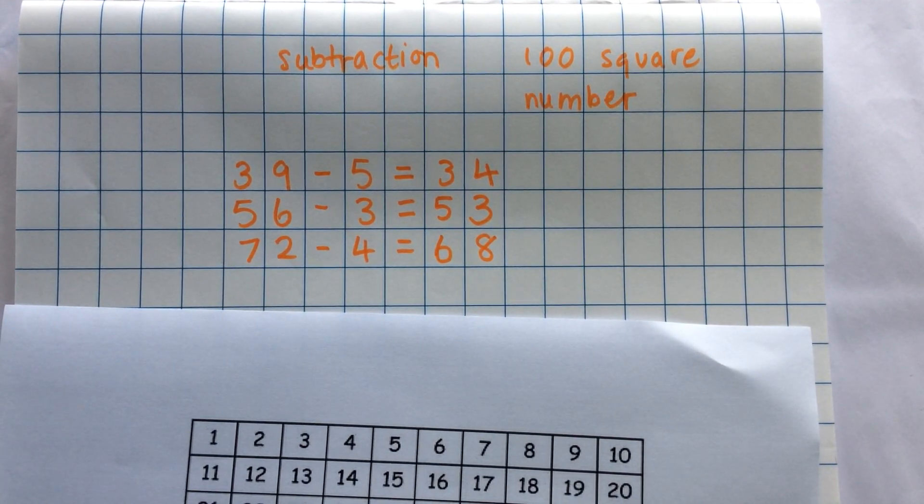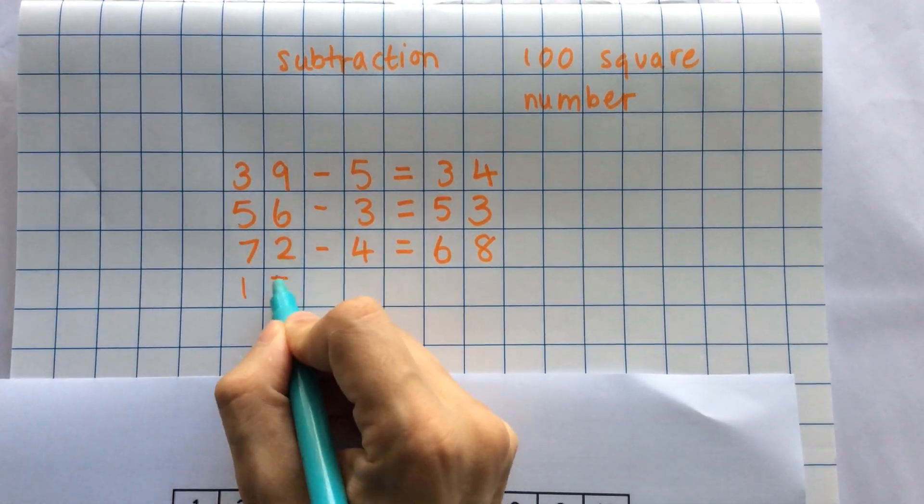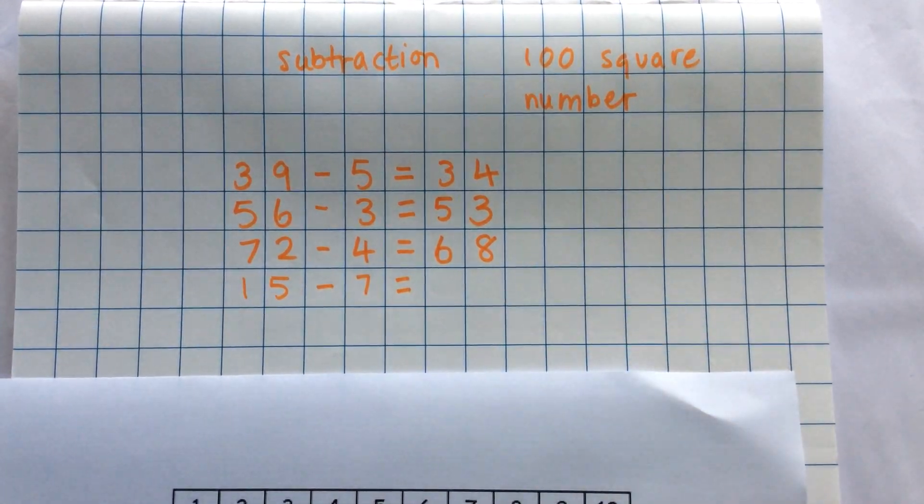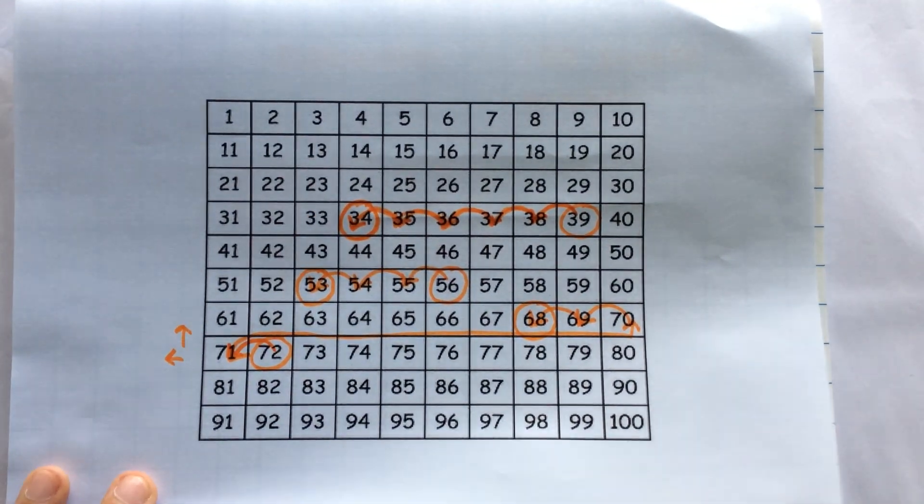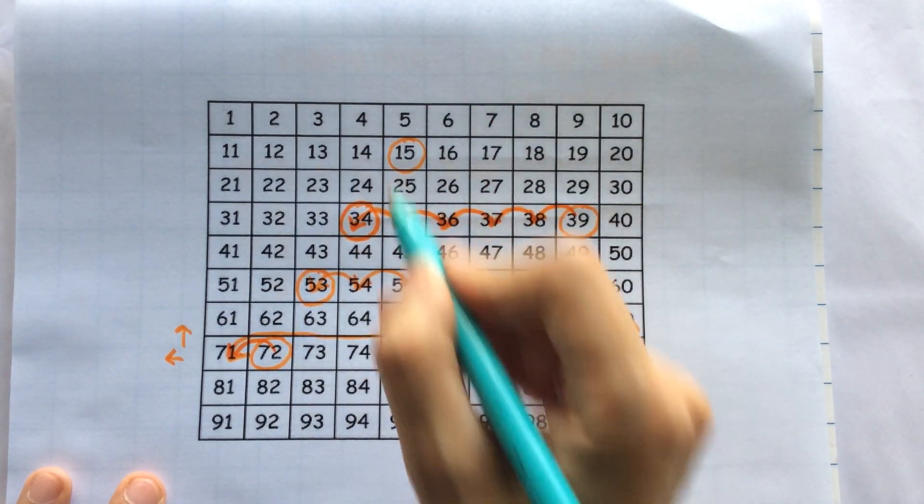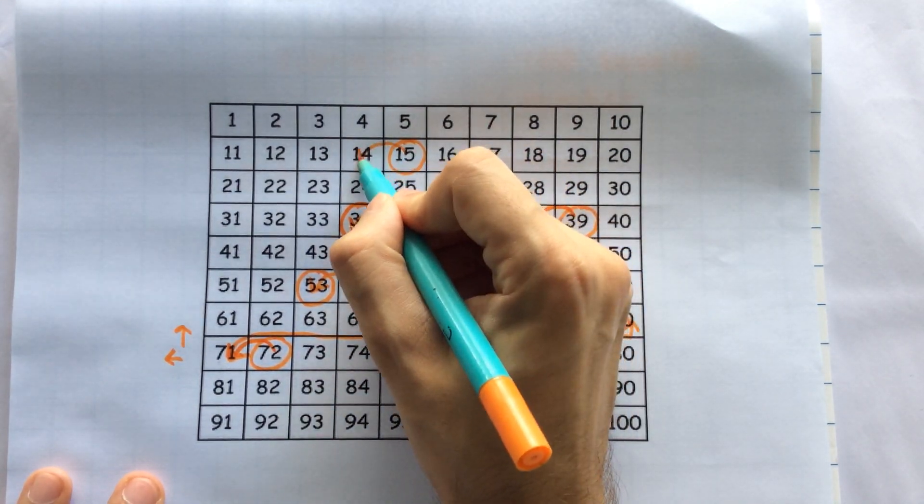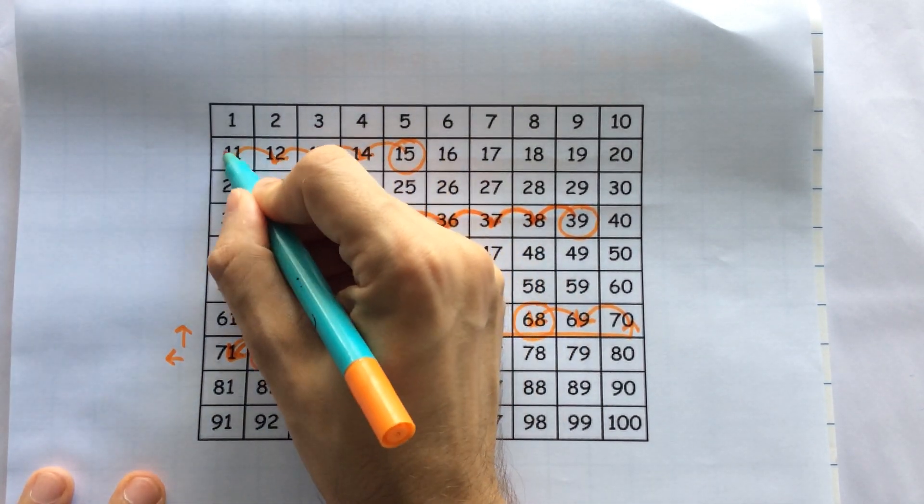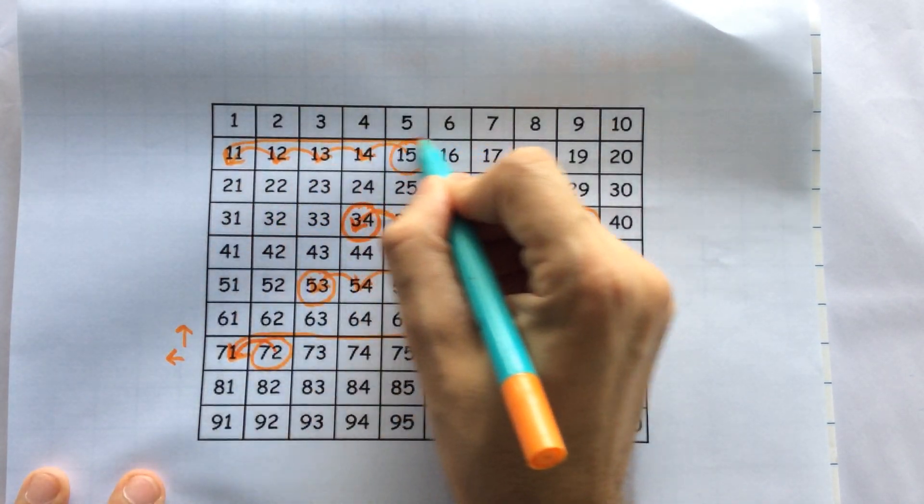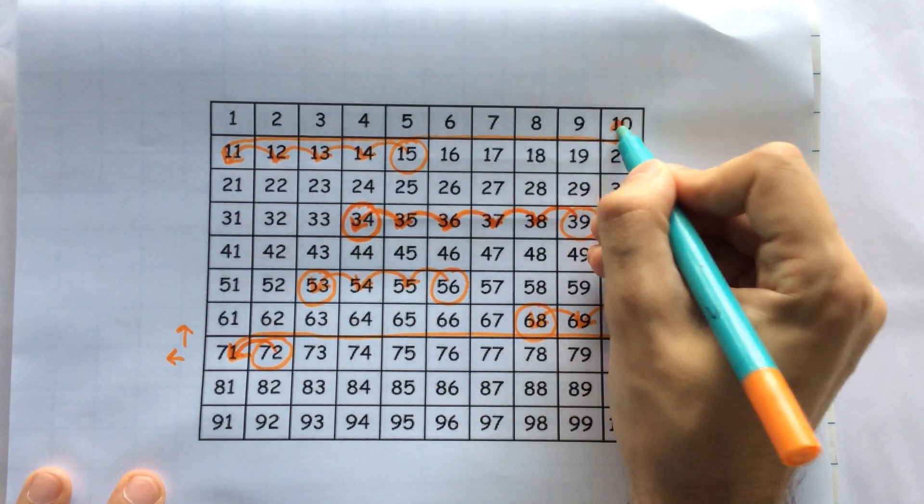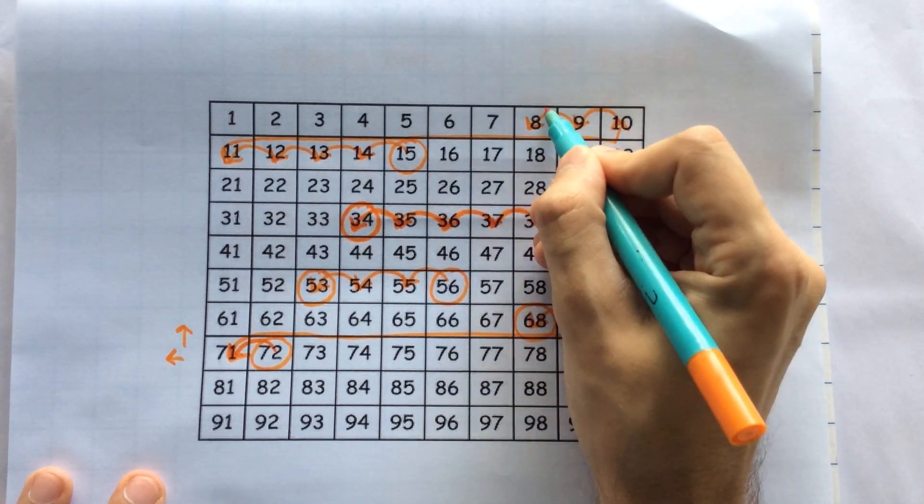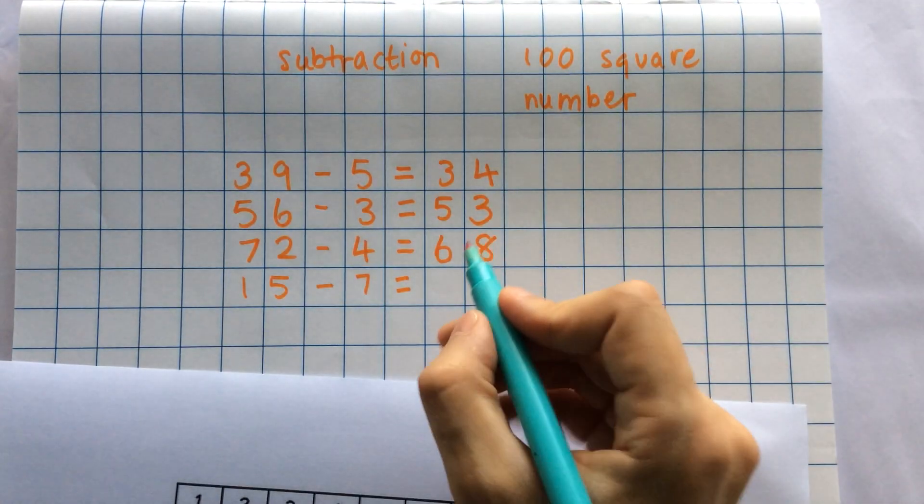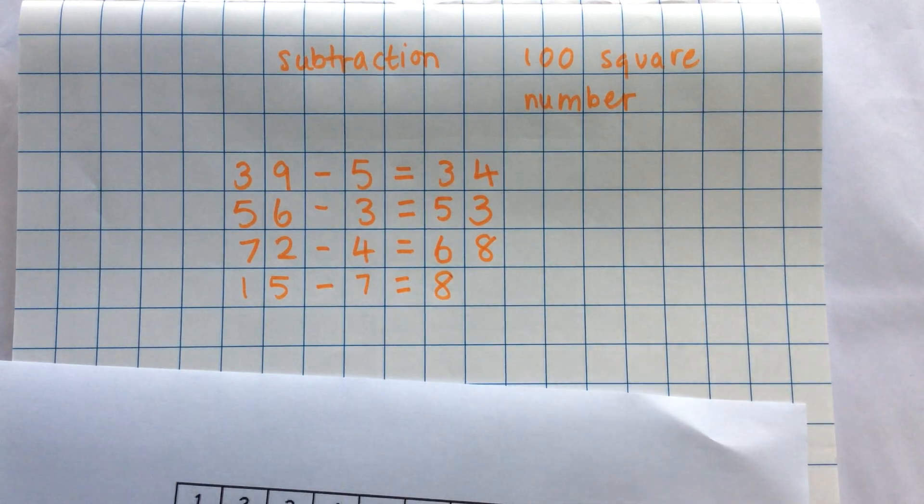Let's try one more just like that. I'm going to do 15 minus 7. I find 15 and I circle it. I count back 7. 1, 2, 3, 4, big jump back, 5, 6, and 7. And my last jump lands me on 8. So my answer is 8.